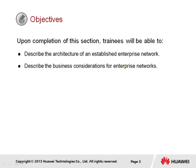Upon completion of this section, it is generally expected that trainees will be able to describe the architecture of an established enterprise network, as well as describe the business considerations for enterprise networks.